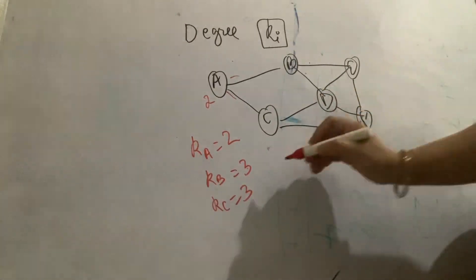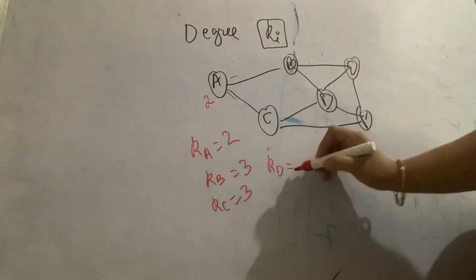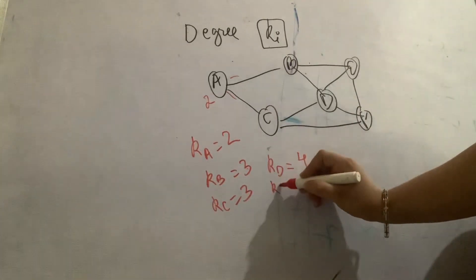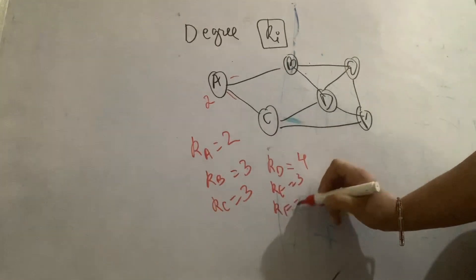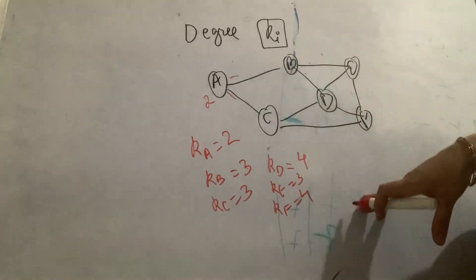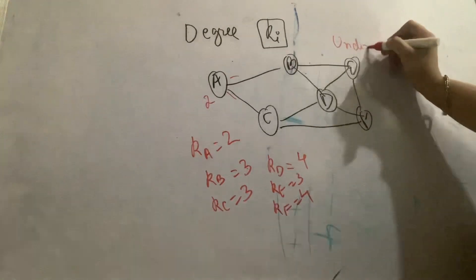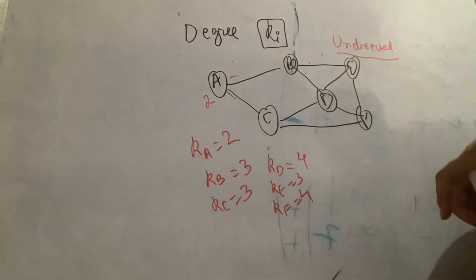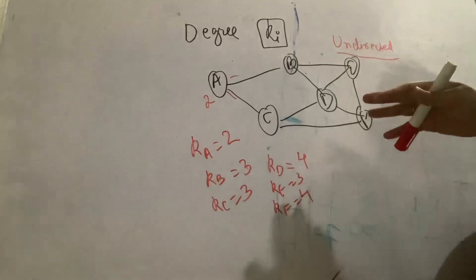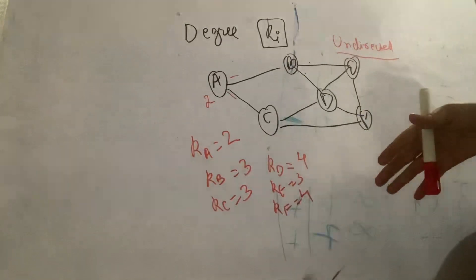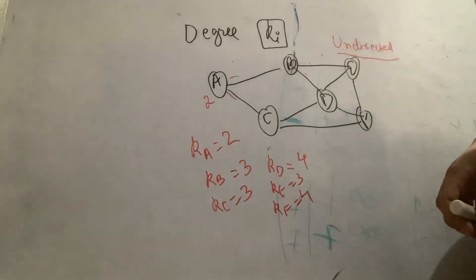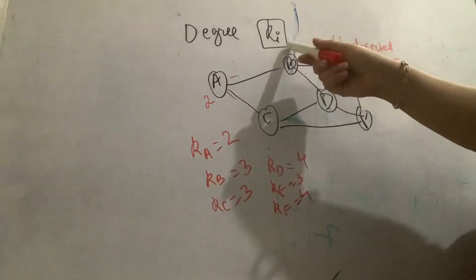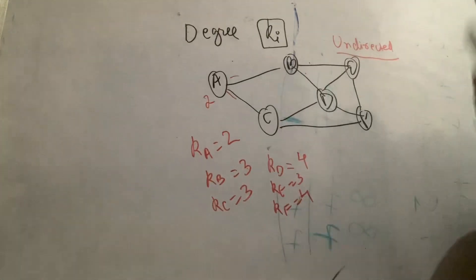Degree of node D is 4. Degree of nodes F and E is 3. So this is how we define degree — it is simply the number of links connecting to that particular node. This is all for an undirected graph. For an undirected graph with a set of nodes and set of edges, degree is simply the links connecting to any particular node. Ki represents the degree of the i-th node — please note this representation.